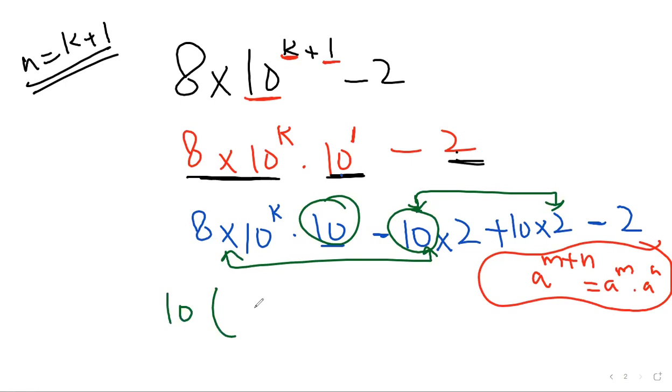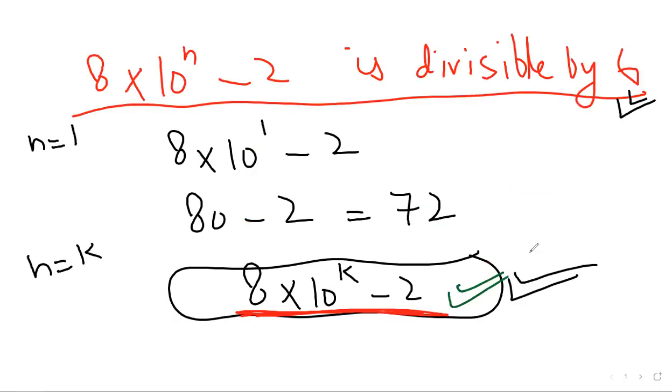10 is common. 8 times 10 to the power k minus 2. This is 2 here. It has become exactly the same that is already valid for k.